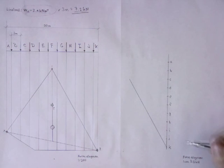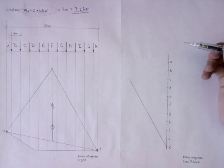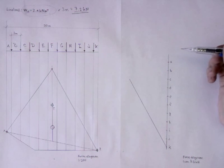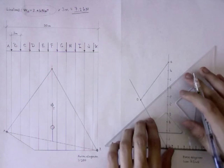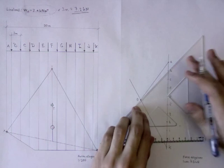Notice that drawing the load line not too far from your form diagram will save you some problem by transferring the lines. Now connect the point O with all of your point loads.